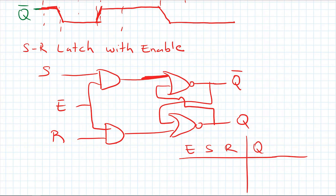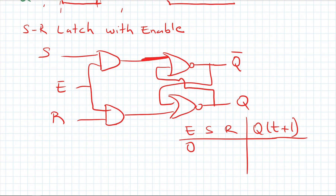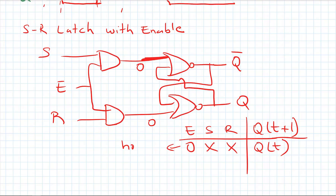Let's say my Q(t+1) here. If the enable is zero, I will have zero here and zero here, so this will be my hold state and I will be getting Q(t) at my output. I don't care about what S or R is — this gives a hold state. It means there is no change, so I am disabling my SR latch and holding the previous value.